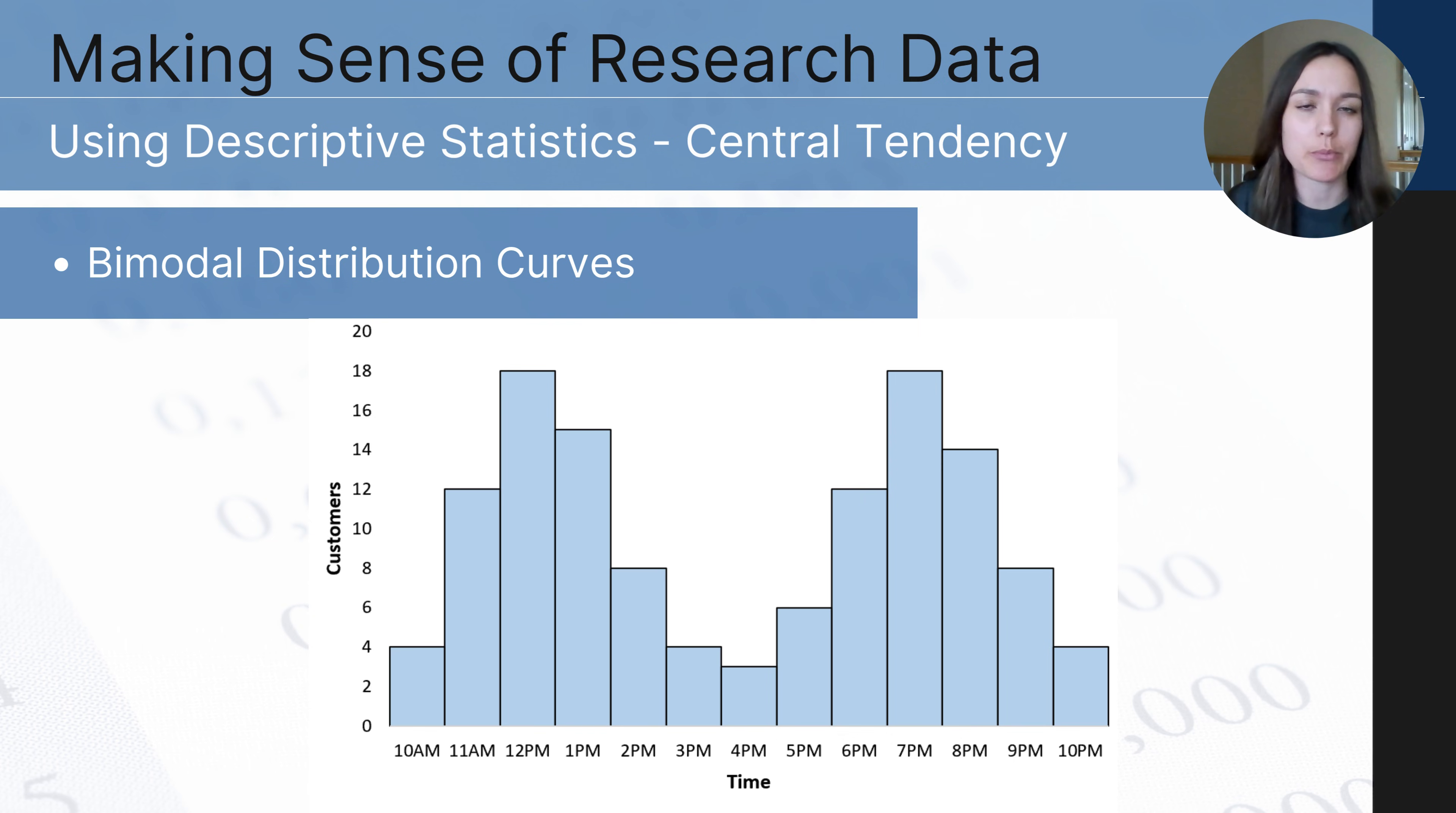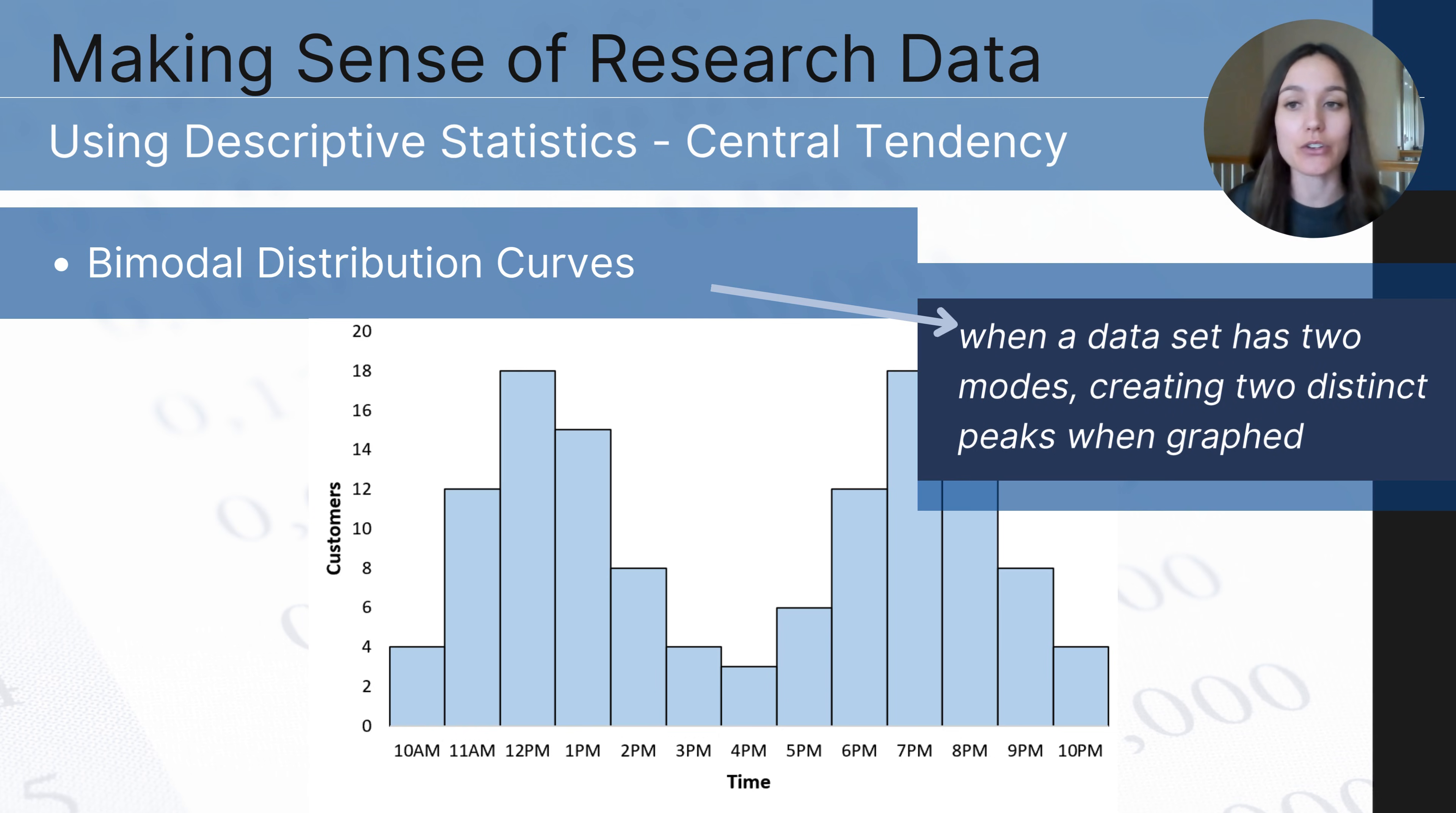So this is an example of a distribution that has two modes and it creates two peaks. Rather than a single bell curve that had one mode, this particular data set had two. And this is what we call a bimodal distribution curve, meaning it has two modes.